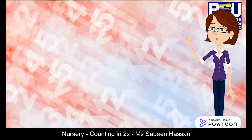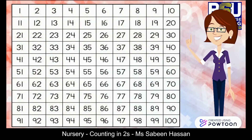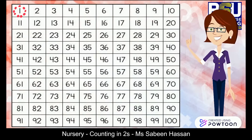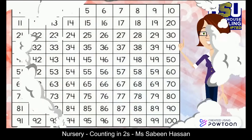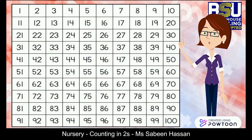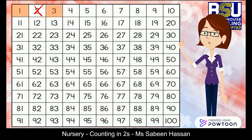Now let's learn counting in twos using a hundred square grid. A hundred square grid has numbers starting from one and reaching to one hundred. We'll take the start from number one, skip number two, and land upon number three.